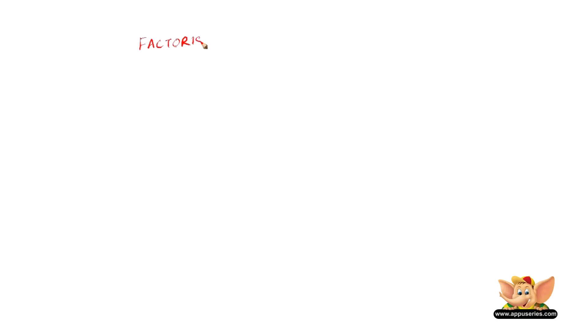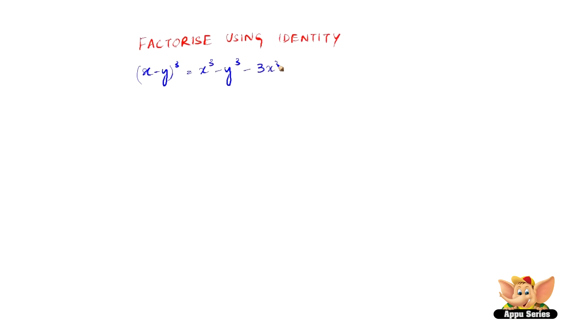Let us factorize using the identity: x minus y, the whole cube, equals x cube minus y cube minus 3x squared y plus 3xy squared.